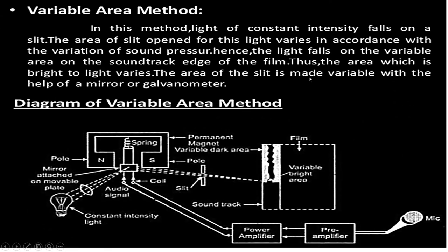The other method is the variable area method. In this method, light of constant intensity falls on a slit. The area of the slit open to this light varies in accordance with the variation of sound pressure. Hence light falls on a variable area on the soundtrack edge of the film — the area exposed to light varies. The area of the slit is made variable with the help of a mirror or galvanometer.